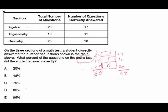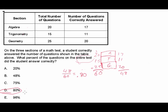Adding everything up, we have 48 questions correct out of 60. We represent that as 48 over 60. Using your calculator: 48 divided by 60 equals 0.8. We write that as 0.80, and that tells us the answer is 80 percent.